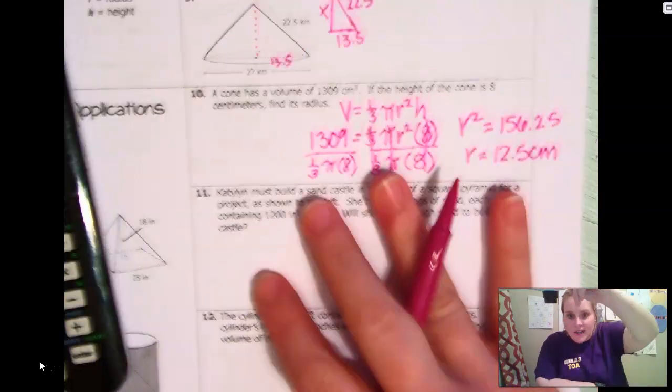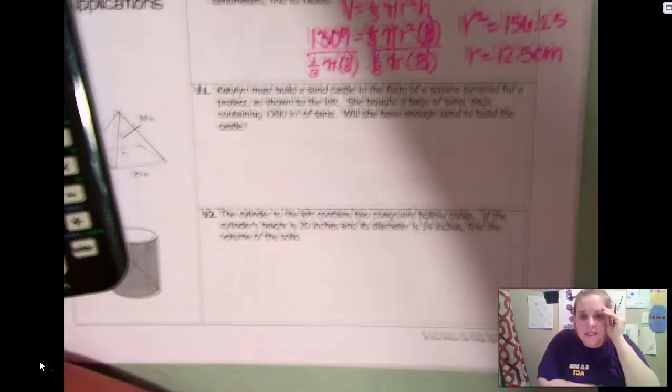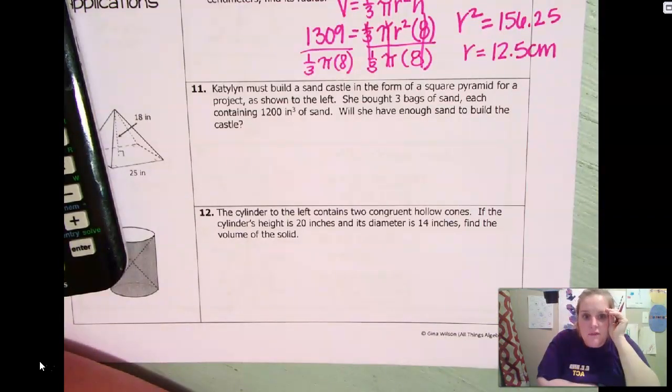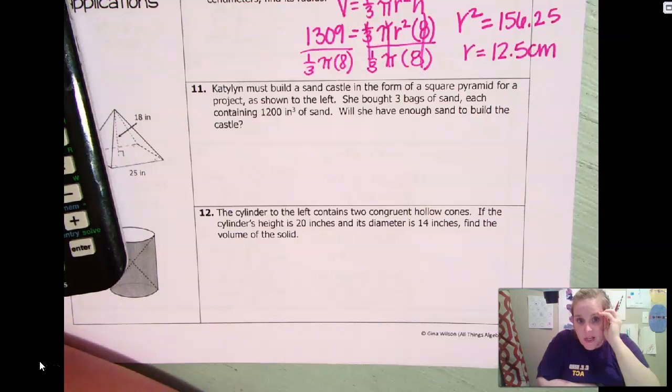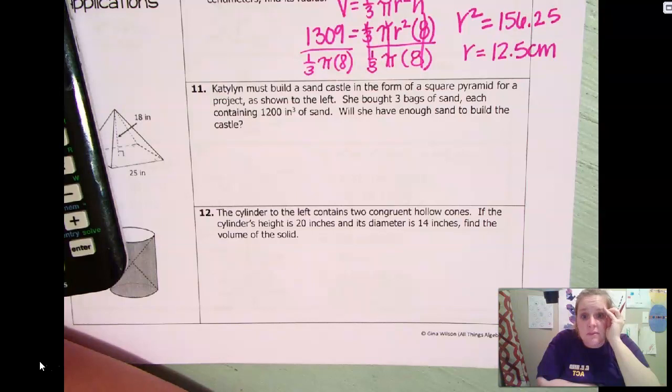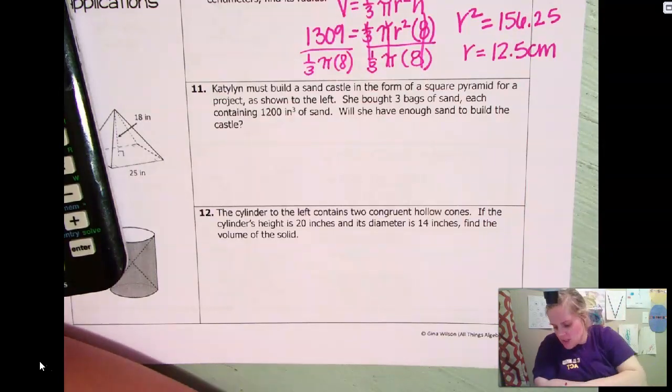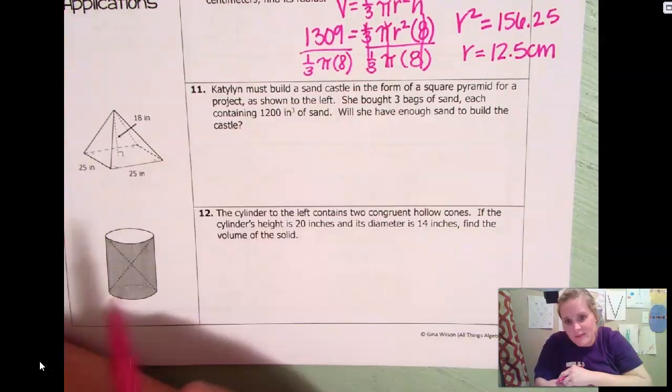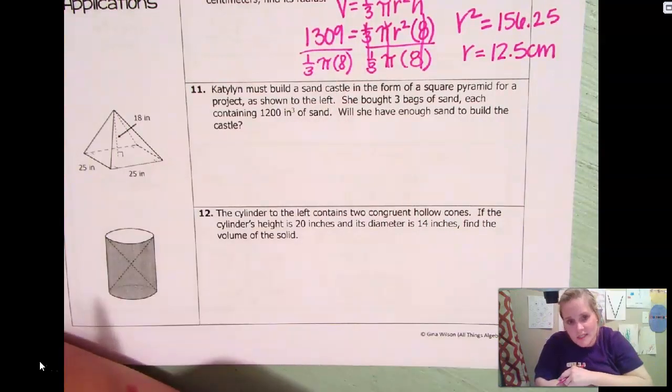Number 11. Caitlin must build a sand castle in the form of a square pyramid for a project as shown to the left. She bought three bags of sand, each containing 1,200 inches cubed of sand. Will she have enough to build the castle? Okay. So here's our castle over here. I guess we need to find the volume of that first so that we can decide if she has enough sand.